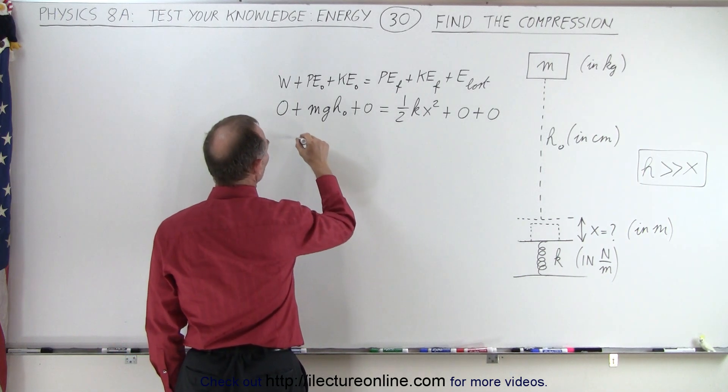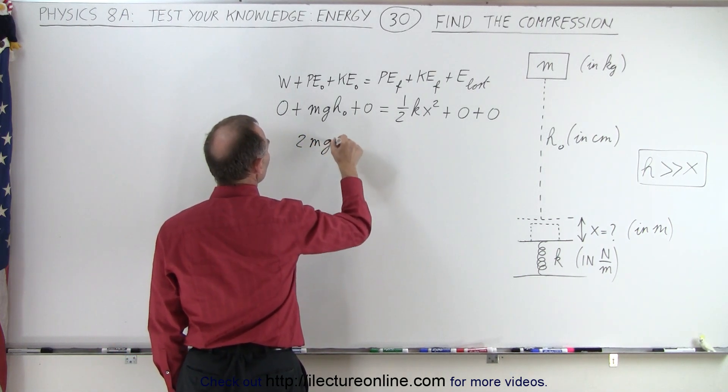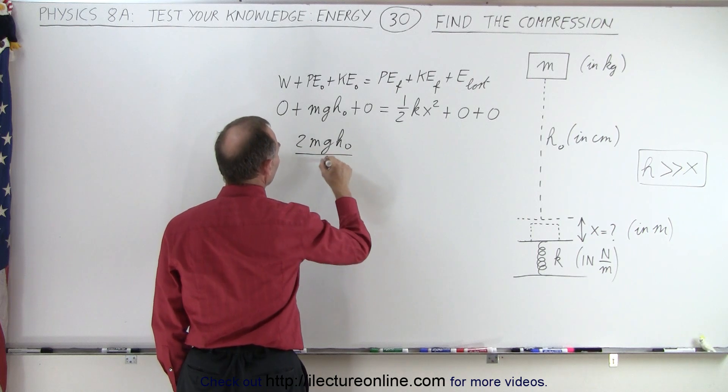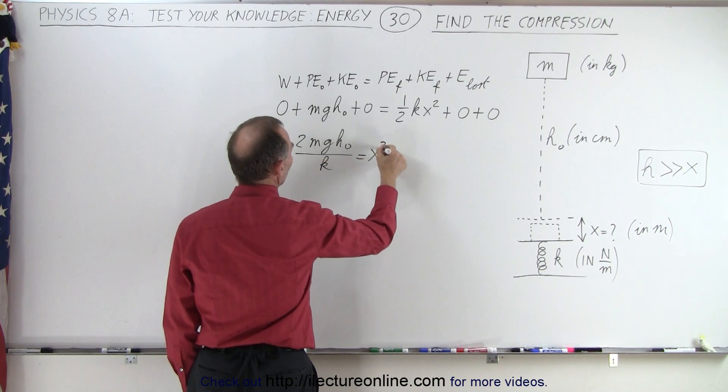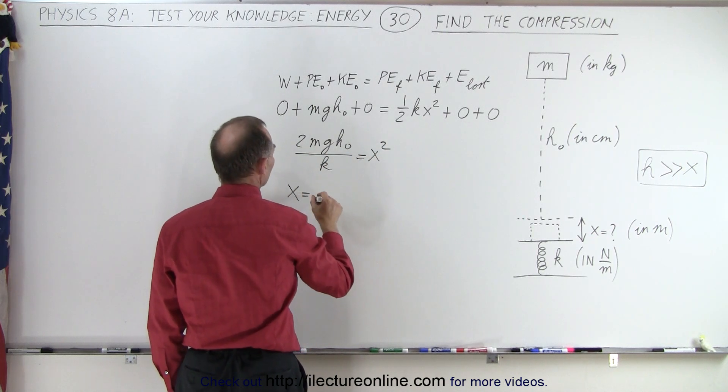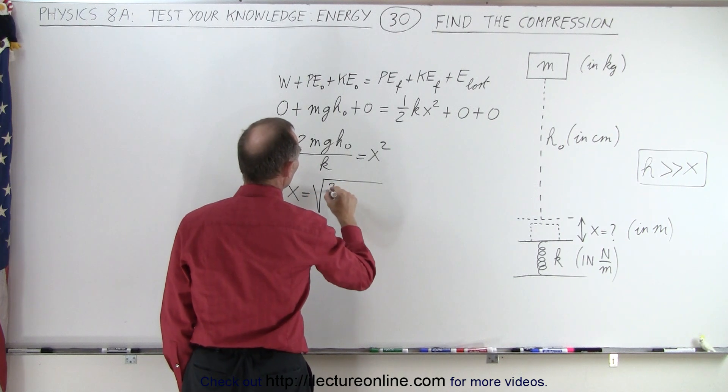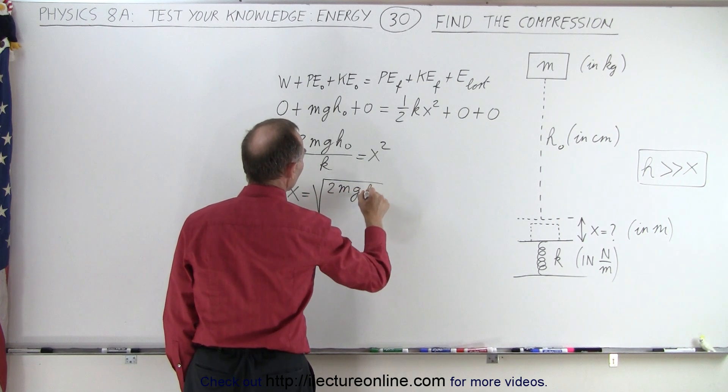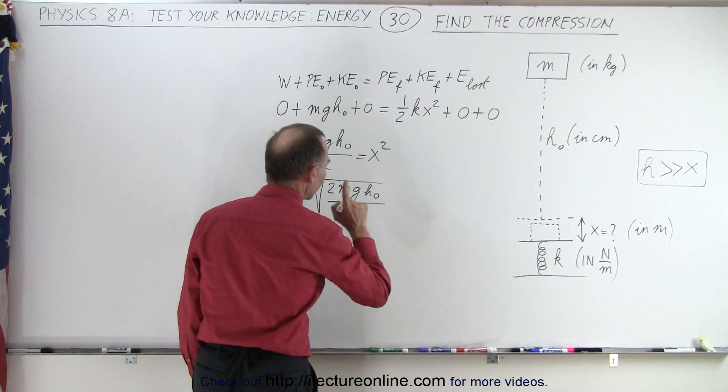So that means that 2mgh initial divided by k is equal to x squared, so x is equal to the square root of 2mgh sub-naught divided by k. But,